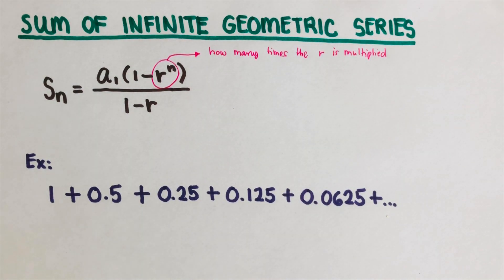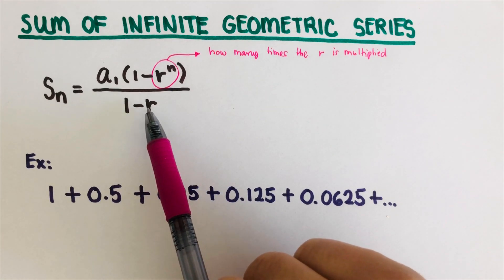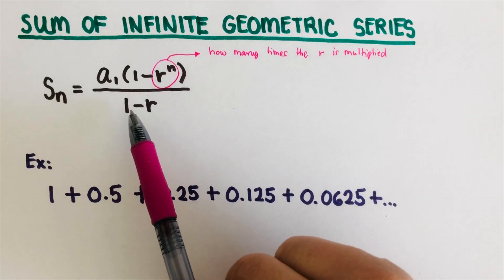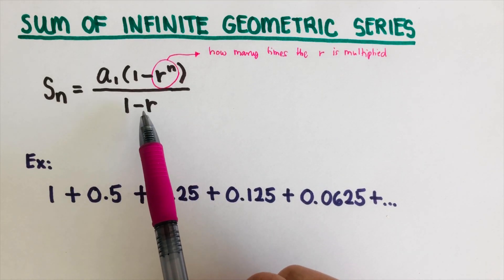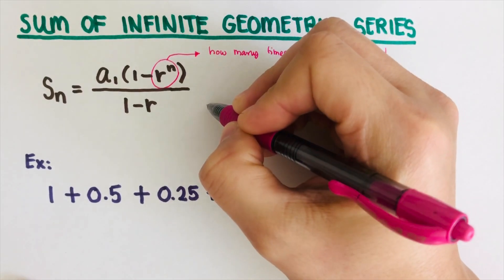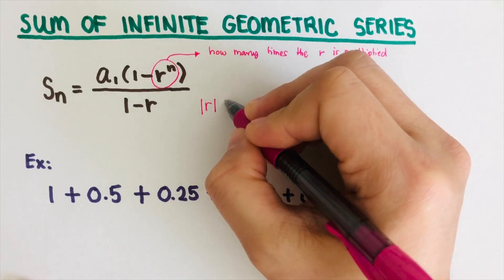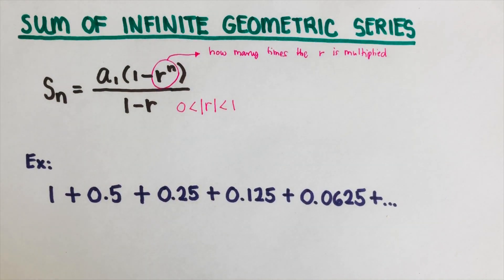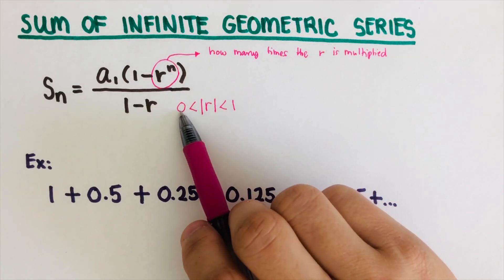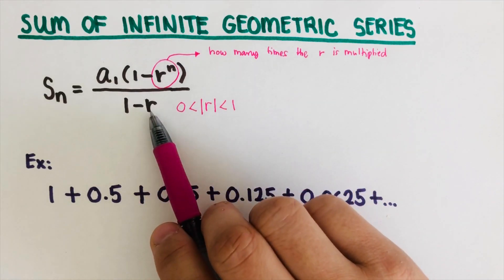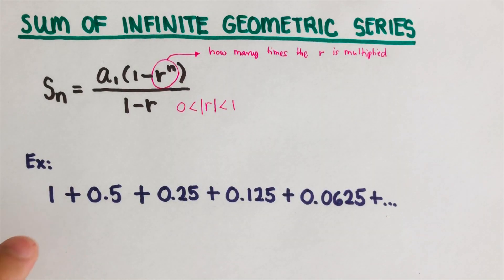There are some considerations here. If r is equal to one, then one minus one is zero, and if the denominator is zero the expression becomes undefined. So the value of r should not be one. We will evaluate when the absolute value of r is less than one — so numbers between 0.1, 0.2, 0.3, up to 0.9. We're not considering one because that would make the equation undefined.